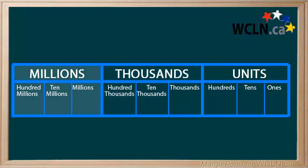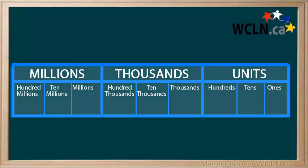To the left of that are the millions. There are millions, ten millions, and hundred millions. If we know these place value terms, we can use these words to say numbers correctly.